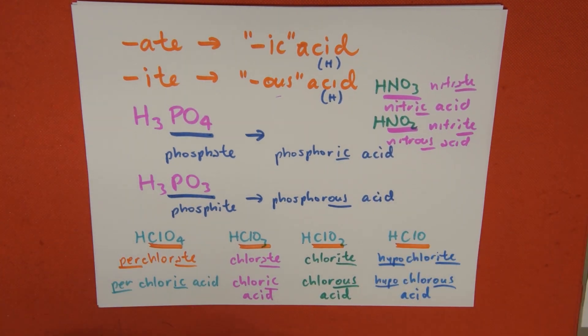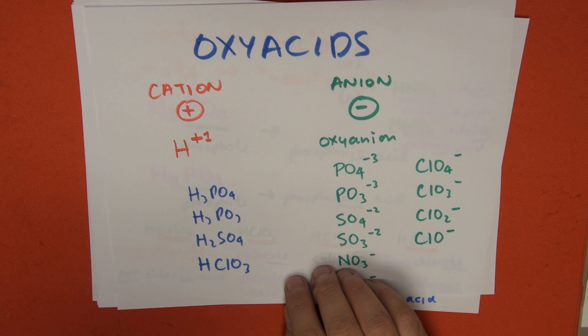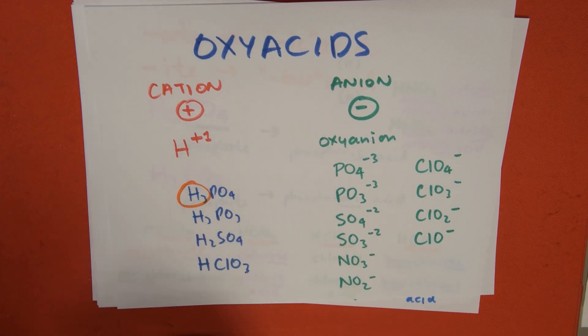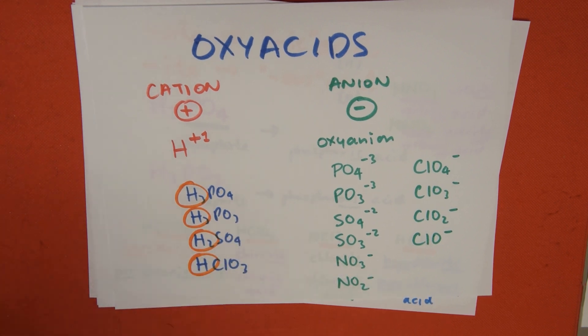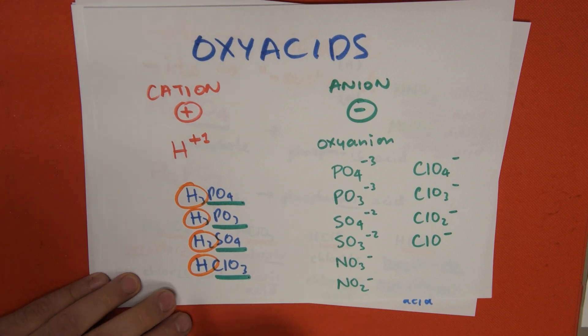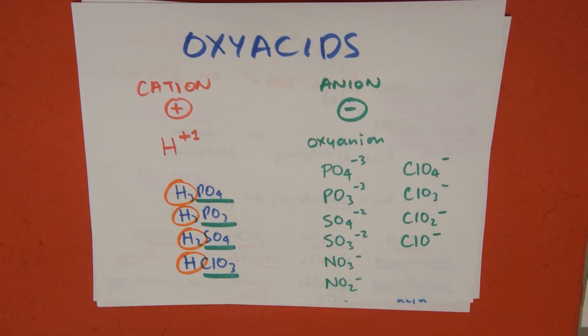One last tip: how do we recognize these? Our cation is always going to be hydrogen, and our anion is always an oxyanion. Again, look up some exercises on the internet, and you can practice with this. Thanks for watching.